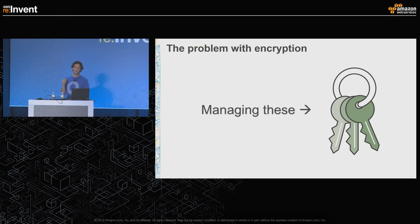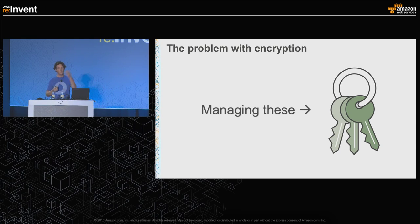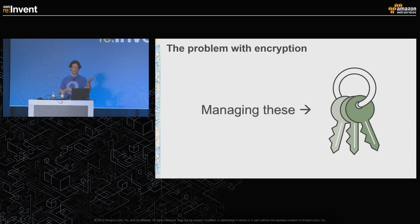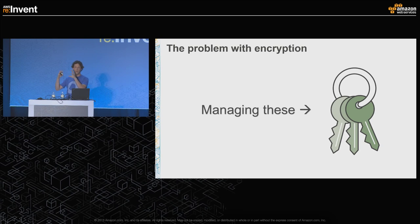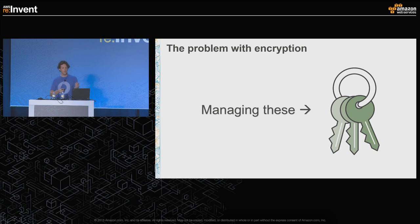The problem with encryption is that you take a bunch of data, you encrypt it and you've made it confidential, but now you have some other data that you need to somehow keep confidential — and it's the keys. Effectively what you're doing is moving the problem from a larger set of data to something small that might be slightly more manageable.